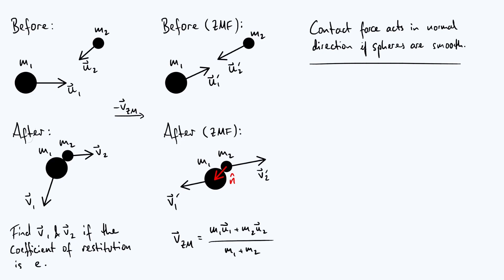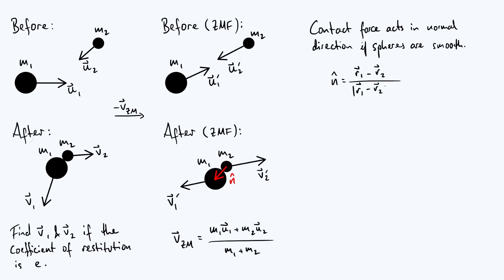For the rest of this video we assume the spheres are smooth, so the contact force acts in the n direction. Dealing with rough spheres quickly becomes more complicated, not least because the spheres would start rotating after the collision. The n vector goes from the center of the second sphere to the center of the first sphere, so n is r1 minus r2 divided by its modulus to normalize it. We can't avoid introducing position vectors at the time of collision as extra parameters, since the relative position of the two spheres determines the direction in which they push each other.